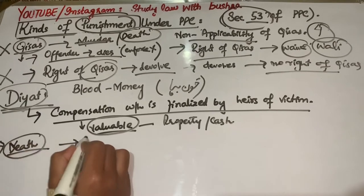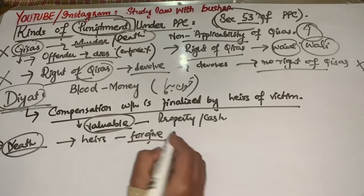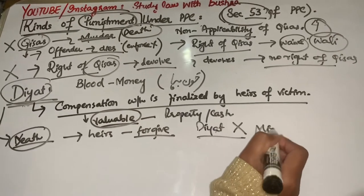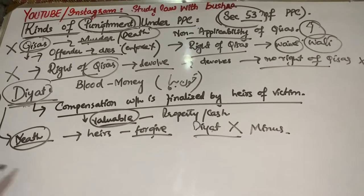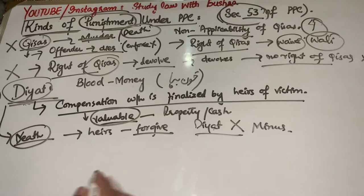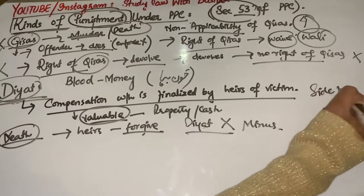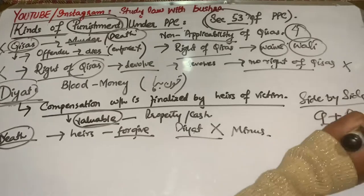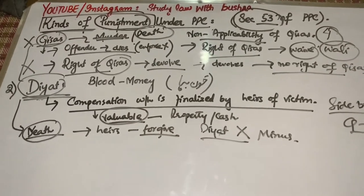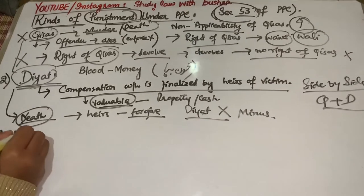Yeh koi bhi valuable consideration hoti hai, koi bhi property bhi ho sakti hai. Diyat bhi jo hai, woh hamesha death ki cases mein hi diya jata hai. Iska matlab hai ki Kisas aur Diyat jo hain, woh side by side hain — means ki woh Kisas jo hai, woh Diyat ke saath chalta rehta hai.